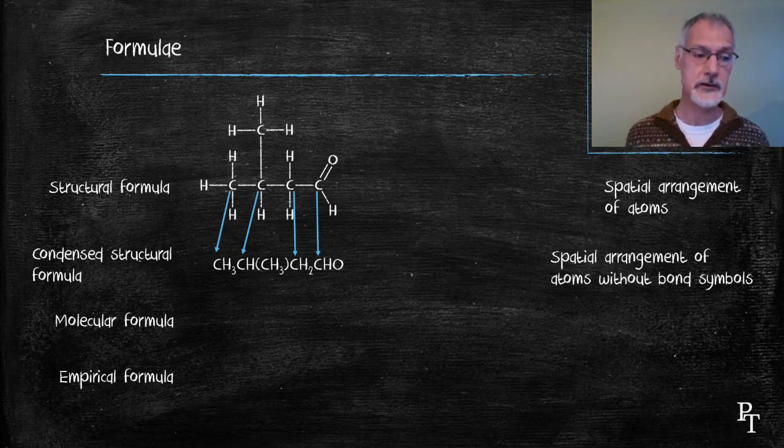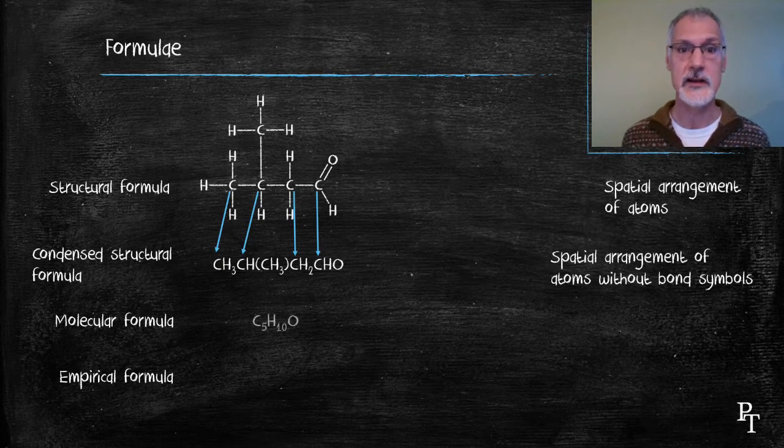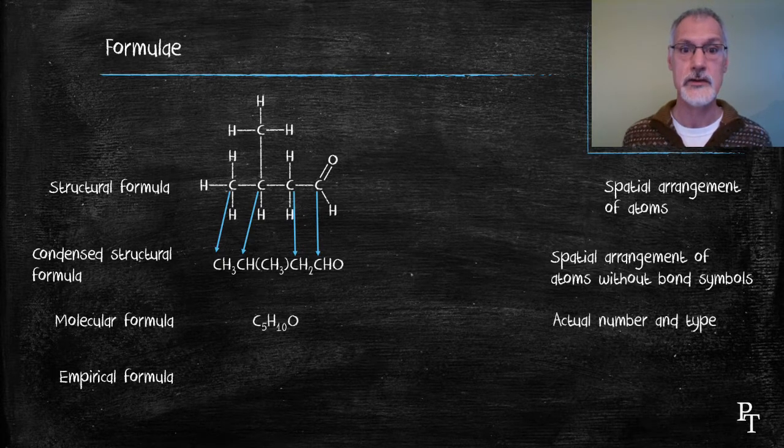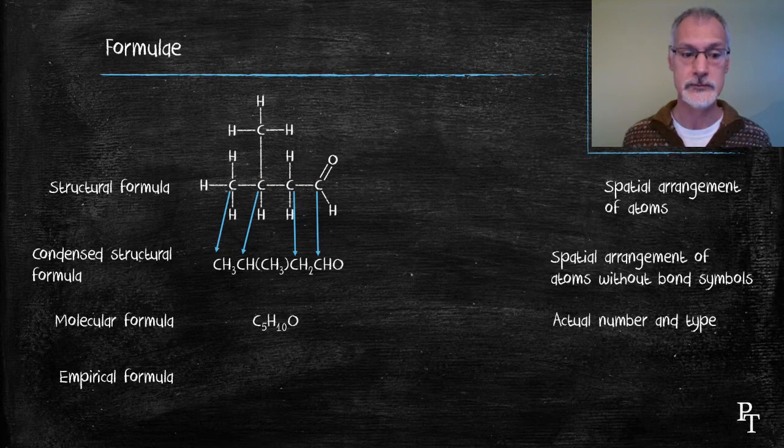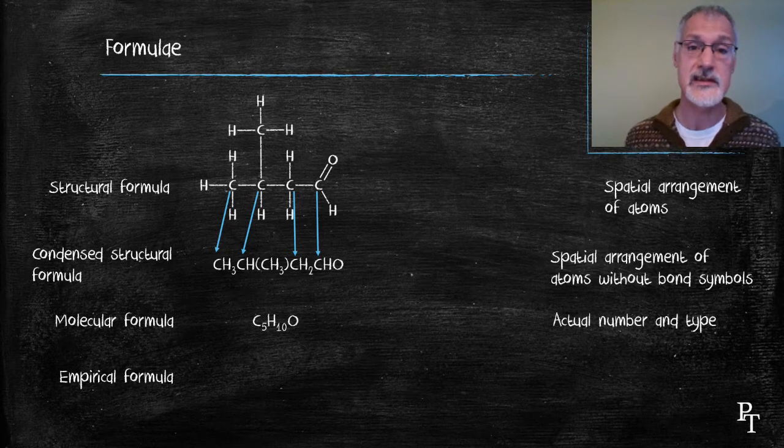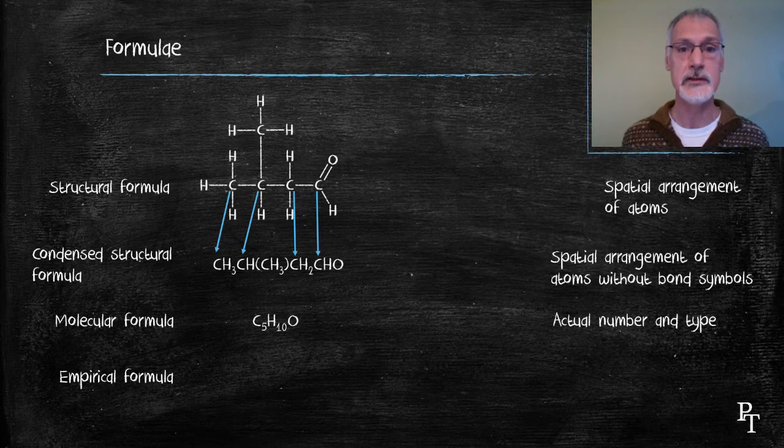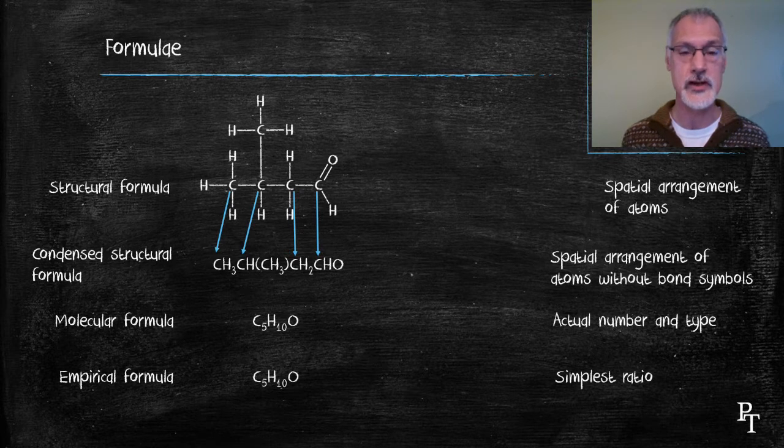This formula can be reduced further to a molecular formula, C5H10O. But there's considerable loss moving from this formula to the molecular formula because we lose the concept of who is bonded to who. And in some cases, this can be reduced further to what's called the empirical formula, which expresses the elements in their lowest ratio.